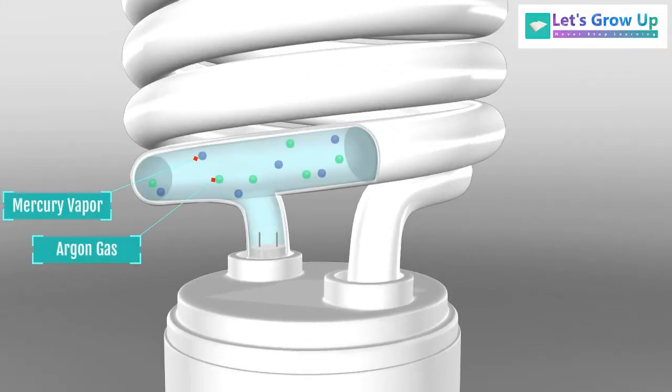These bulbs contain argon and mercury vapor within the spiral-shaped tube instead of filament. Bulbs need an AC supply that facilitates the changing of the functionality of anode and cathode in a CFL bulb.